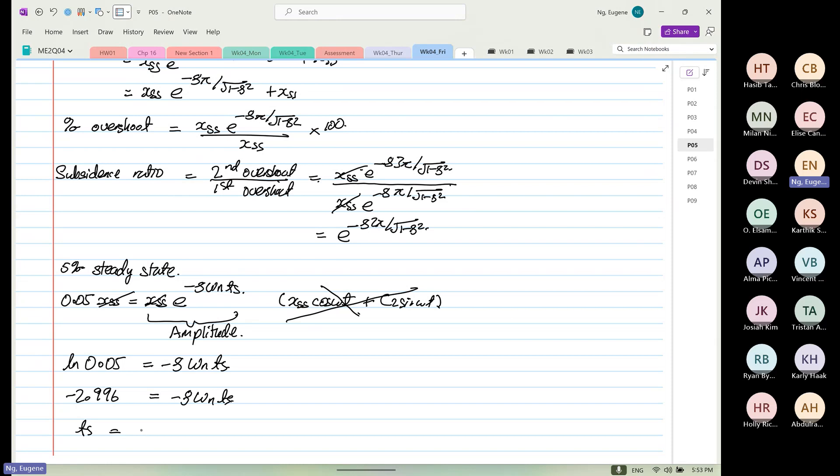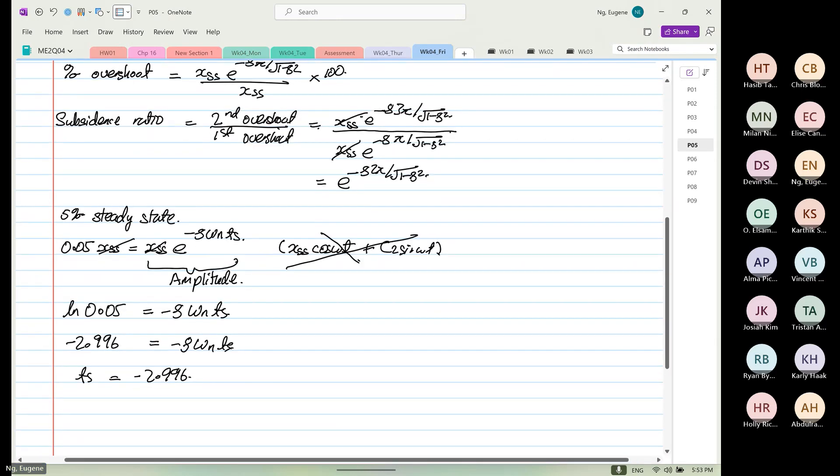So t_s is equal to minus 2.996 divided by minus zeta omega_n. If it's negative, start to panic. This will never be negative. Listen, this thing I'm teaching you, you're going to use for vibration and you can use for your control theory. So don't forget this.